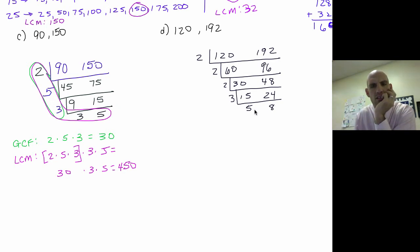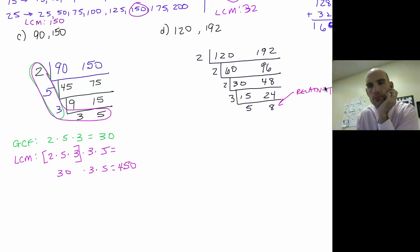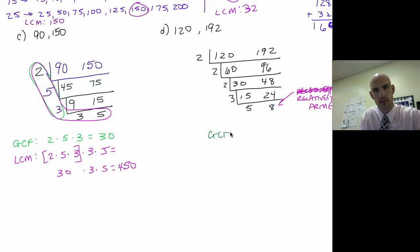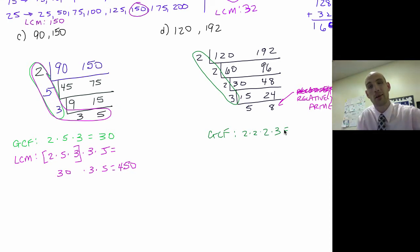Now 3 goes into both — so that gives me 5 and 8. These are what's called relatively prime: they're not both prime numbers, but their biggest common factor is 1. So the GCF works the same way. The greatest common factor is 2 times 2 times 2 times 3 — which is 4 times 2 = 8, times 3 = 24.